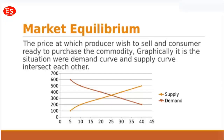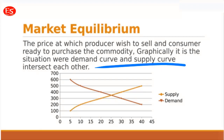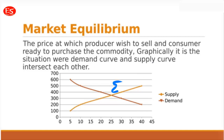Now let's discuss market equilibrium. Market equilibrium is the price at which the producer wishes to sell and the consumer wishes to purchase the commodity. Whenever the producer is ready to sell and the consumer is ready to purchase a given quantity at a given price level, that situation is considered market equilibrium. Graphically, it is represented where the demand curve and the supply curve intersect each other, defined as point E.